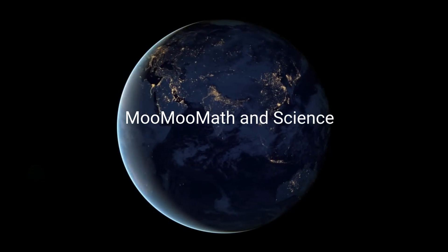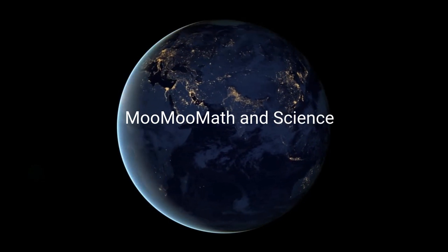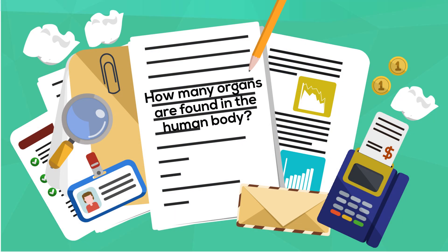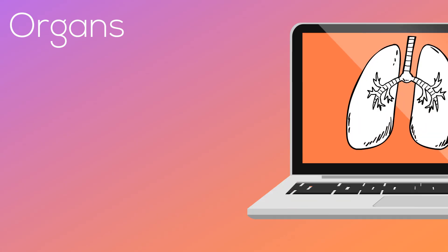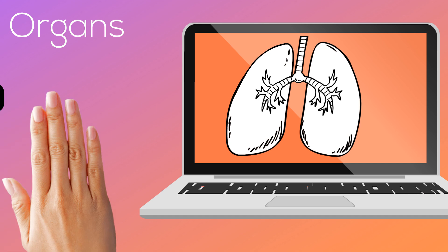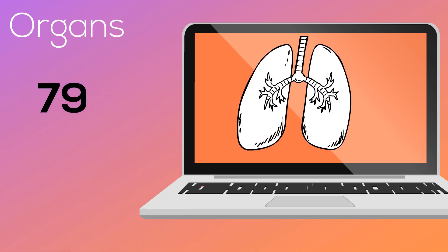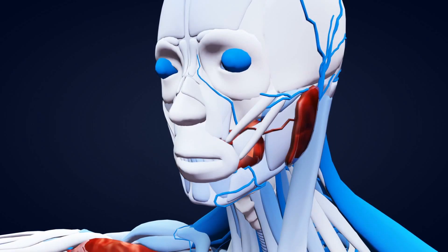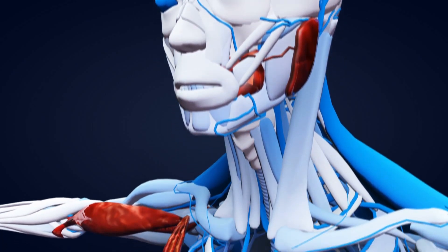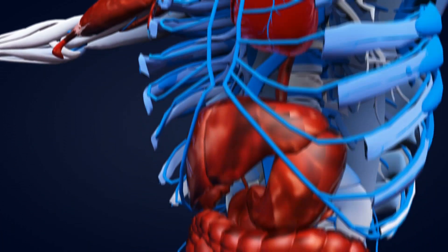Welcome to Moo Moo Math and Science. In this video, I'd like to talk about how many organs are found in the human body. It is widely believed that there are 79 organs found in the human body. However, there is no universal standard definition of what exactly is an organ.